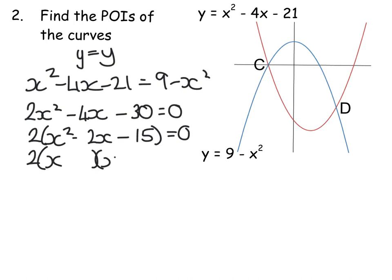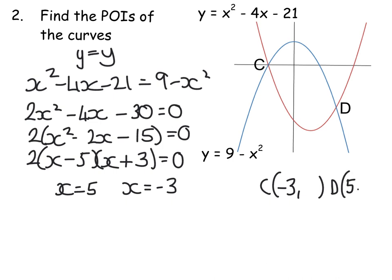So this is what we get when we take out a common factor of 2. And then two brackets, we're looking for numbers that multiply to 15 and add to 2. Well, it's got to be a 5 and a 3. To get negative 2, the negative goes with a 5. And when we solve this, we get x equals 5 and x equals minus 3. So my C-coordinate at the moment we know is minus 3-something, and my D-coordinate we know is 5-something.